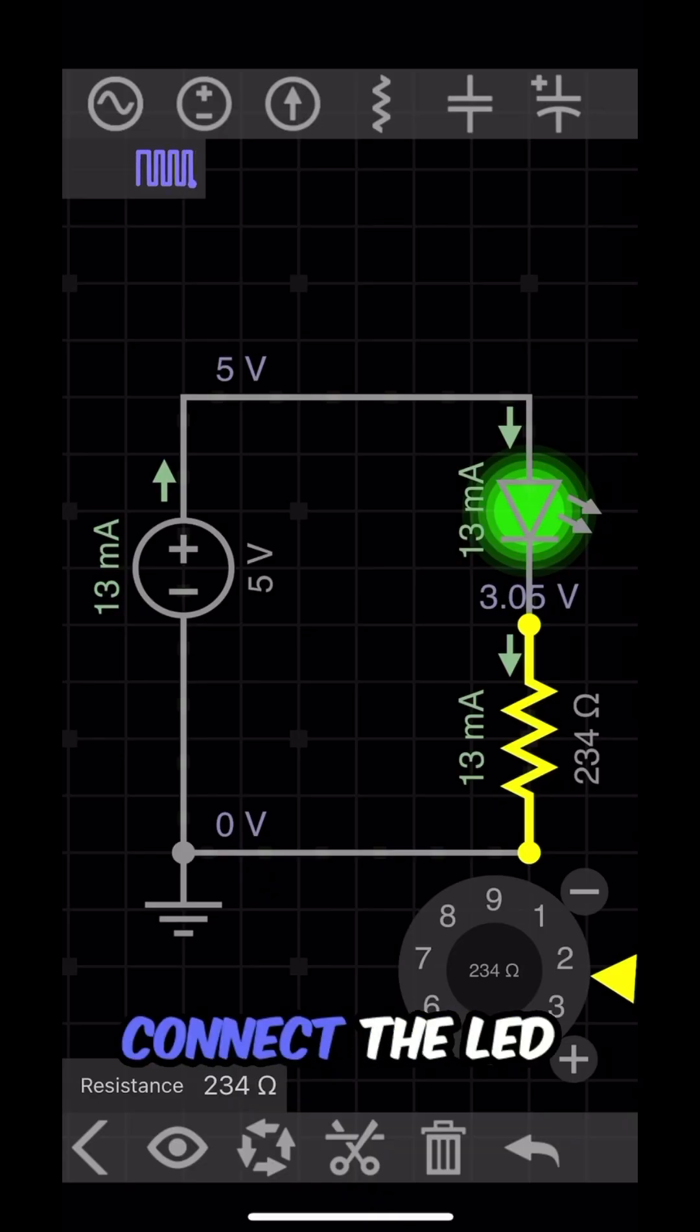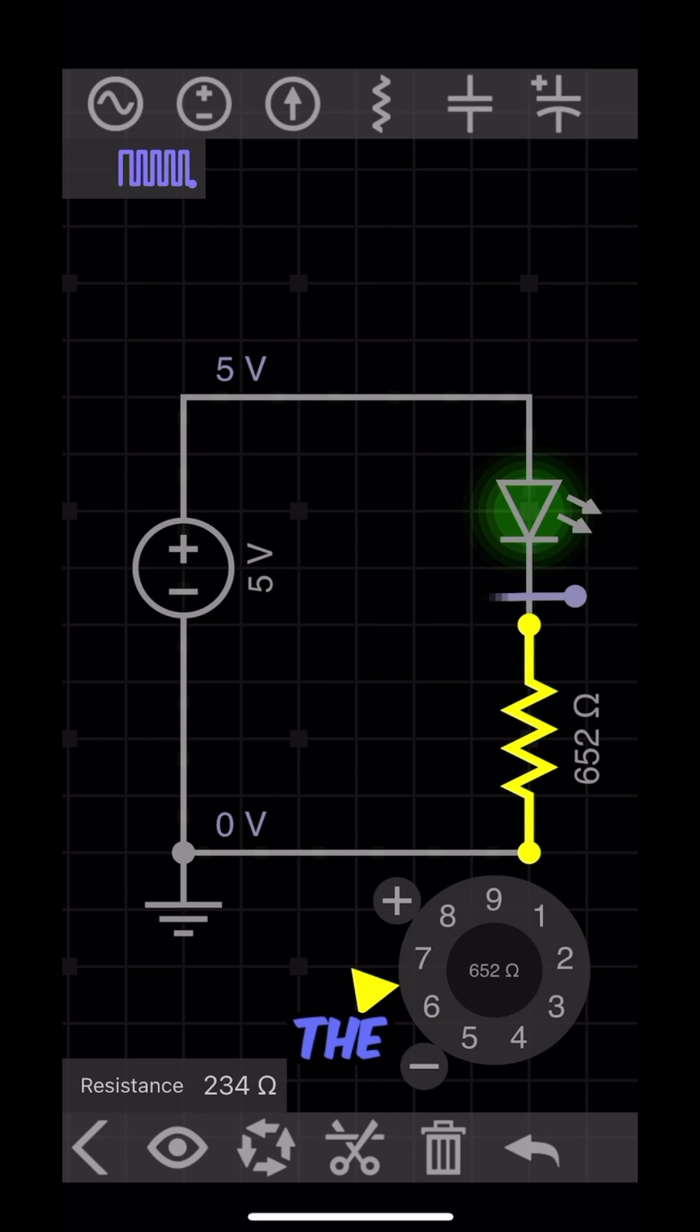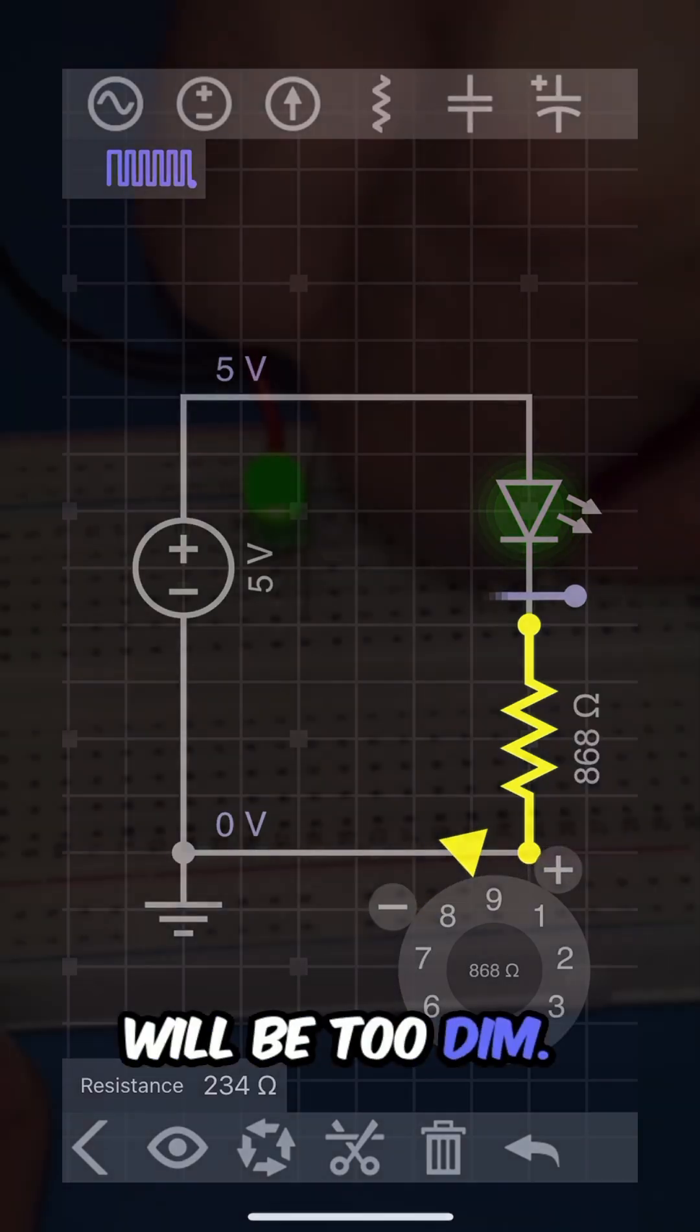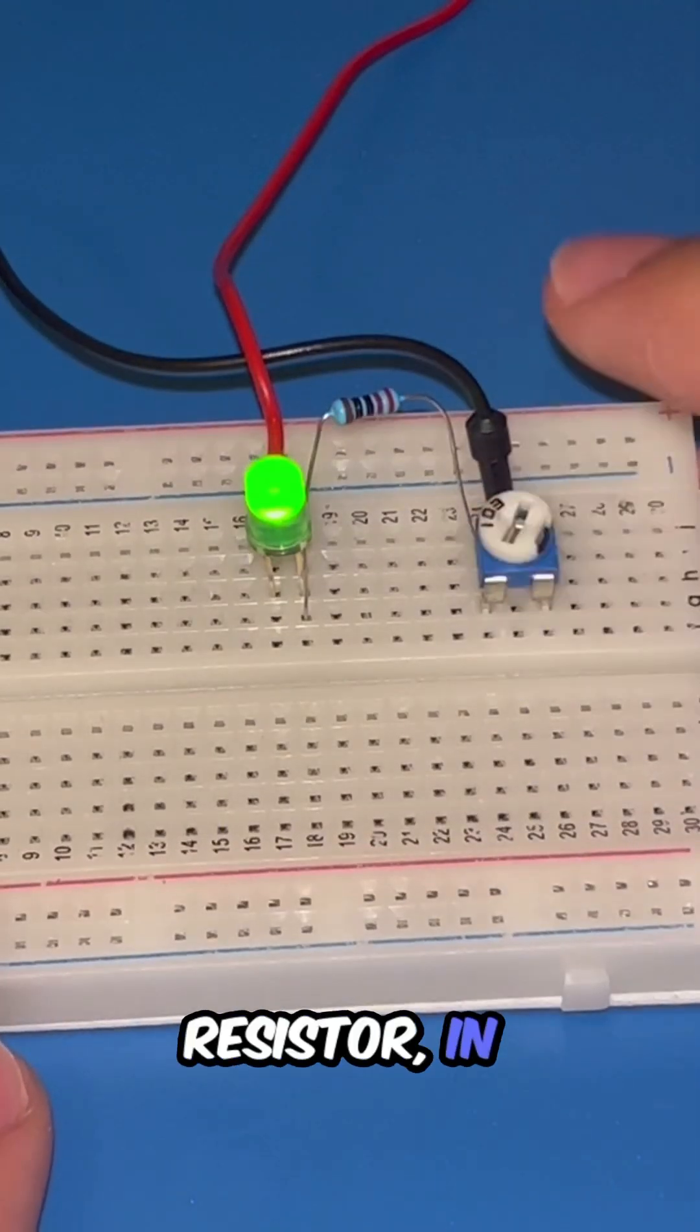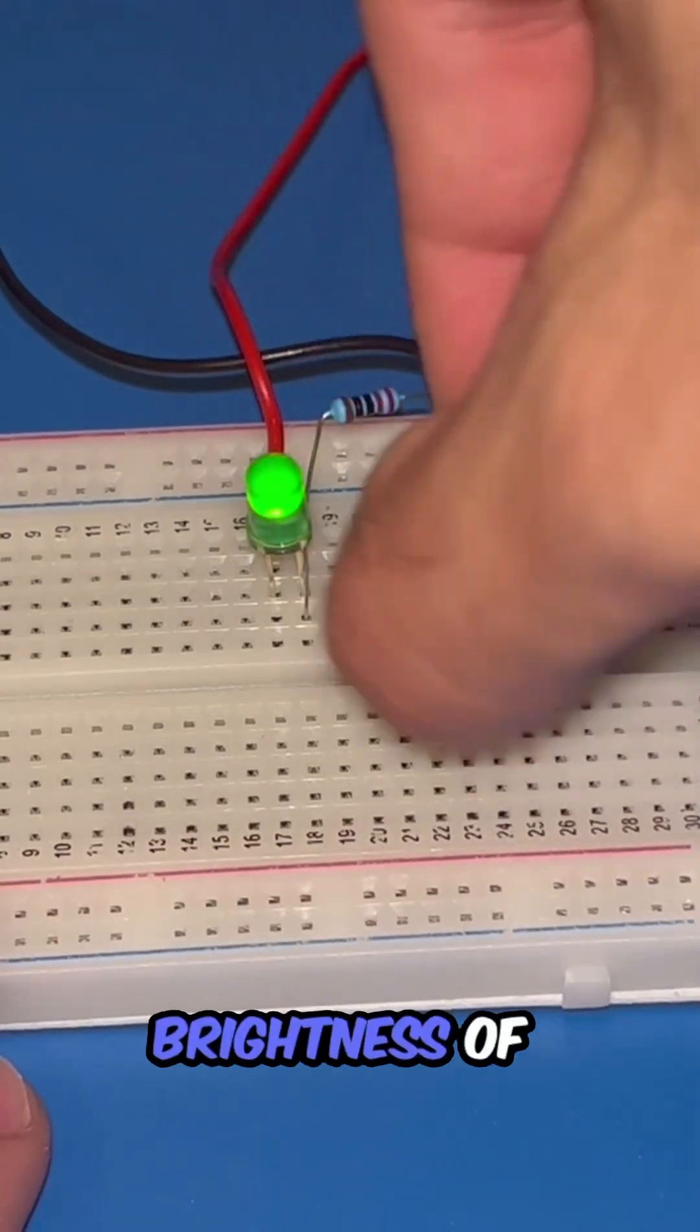On the other hand, if we connect the LED to a very large resistance value, it'll restrict the current so much that the LED will be too dim. You can use an adjustable resistor, in this case a potentiometer, to see the brightness of the LED change.